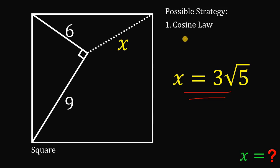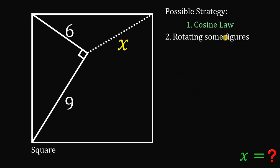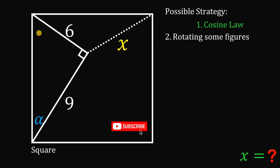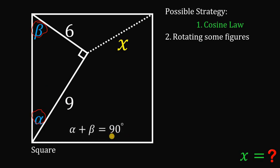The first one is by using the cosine law, and the second one is by rotating some figures. Let's start with our solution using the cosine law. To start with, let's call this angle alpha and this angle beta. Since these are the acute angles of a right triangle, we can say that alpha plus beta equals 90 degrees.